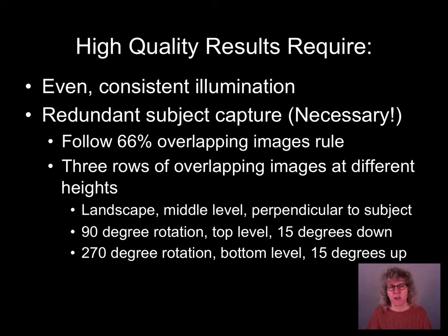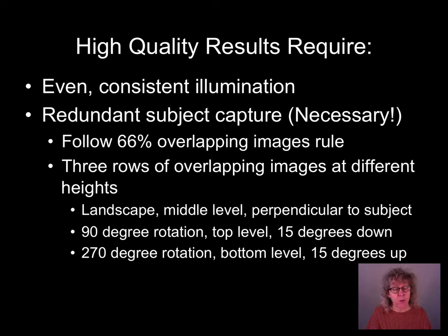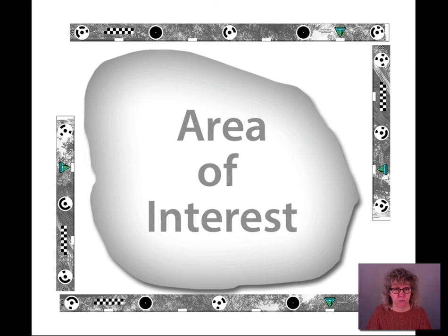In terms of illumination, we want even, consistent illumination. And — a point I'll emphasize several times — we need redundant subject capture. We follow that 66% overlapping rule and take multiple rows of overlapping images at different heights. The example I'll show uses three rows, giving us nine look angles at every point on the surface. We need to think of our scale bars as part of our area of interest, because we want good multiple look angles and redundancy on the scale bars as well.